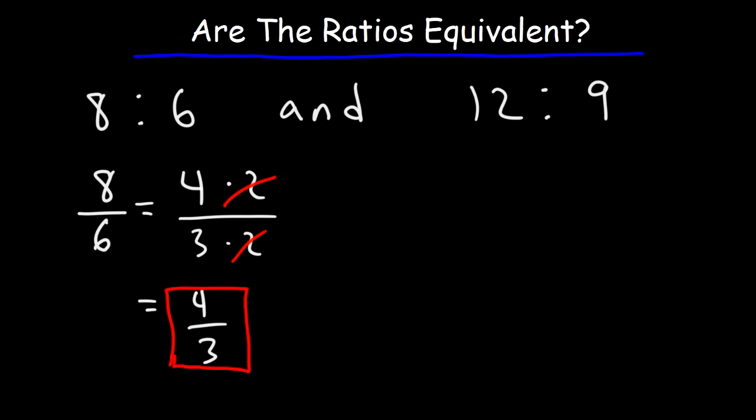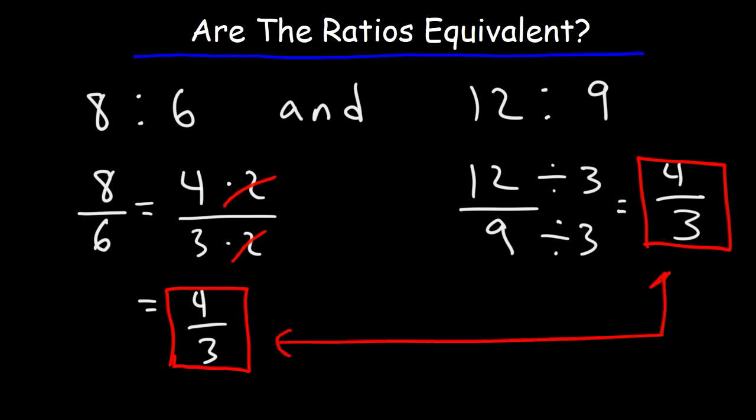Now, let's do the same with the other ratio. 12 to 9 is the same as 12 over 9. Both numbers are divisible by 3. 12 divided by 3 is 4, 9 divided by 3 is 3. So notice that both fractions simplify to the same result, 4 over 3. So this means that these two ratios are equivalent to each other.